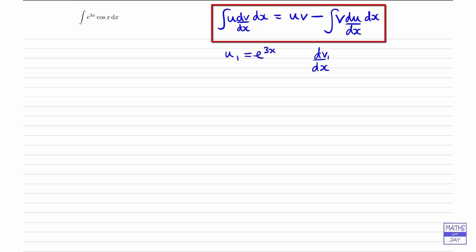And it's actually going to be easier to choose e to the 3x here, because in a moment we're going to be differentiating. If we had chosen dv1 by dx to be e to the 3x, we'd have to integrate to get v1, and then we'd end up with a fraction. So not as easy. So if we've chosen u1 to be e to the 3x, then dv1 by dx will be cosx.